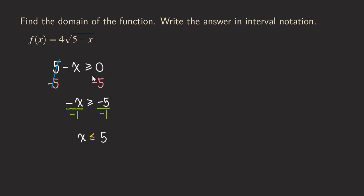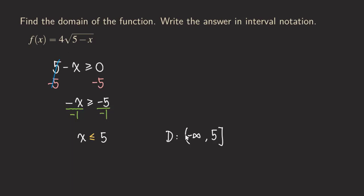So we change the inequality direction, giving us x less than or equal to 5. That is the solution to the inequality. Writing the domain in interval notation: since we want all values less than or equal to 5, we write 5 on the right side. Because there is no restriction on the left, x can be as small as we want, so we write negative infinity on the left with parentheses. Since the 5 is included, we use square brackets for it. That's the domain. Notice that the 4 outside the square root does not affect the domain — whether it's 4, 5, or 1000, what matters is the expression inside the square root.